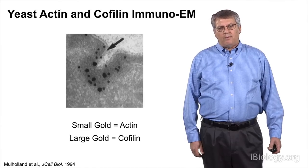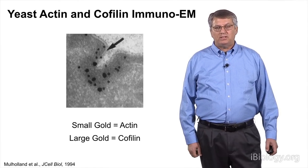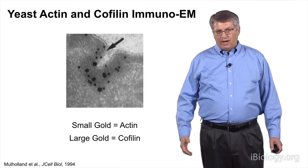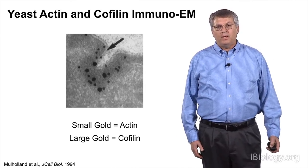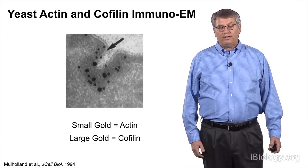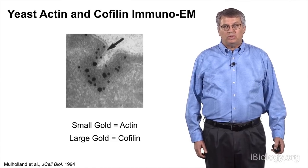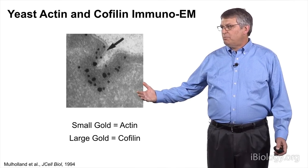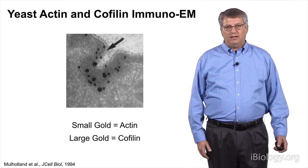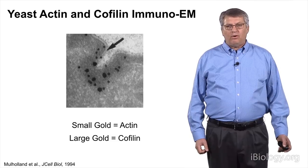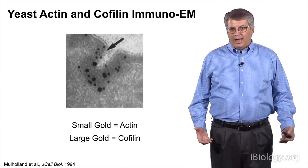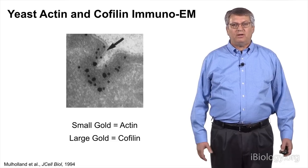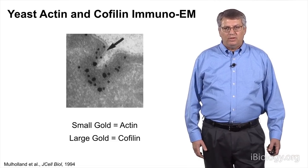We and others started studying these patches in budding yeast after Kilmartin, Adams, and Pringle first saw them by immunofluorescence. We decided to take the microscopy down to an ultra-structural level and do immuno-EM. This is an electron micrograph that John Mulholland made of one of these cortical patches, immunogold stained for actin. What this micrograph shows is that these cortical patches are actually invaginations in the plasma membrane that are coated with actin. At the time, we didn't know whether these invaginations were endocytic sites, exocytic sites, or perhaps some kind of signaling or stress-sensing structure. We didn't know the function.